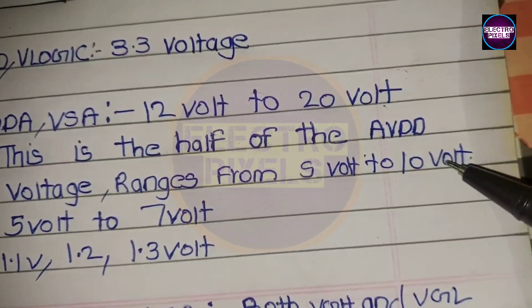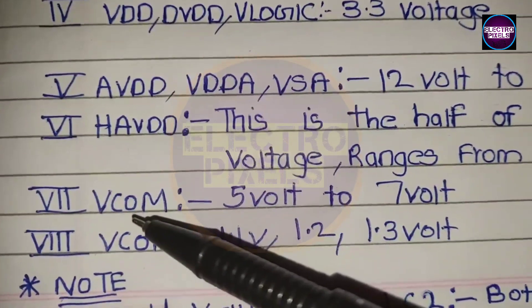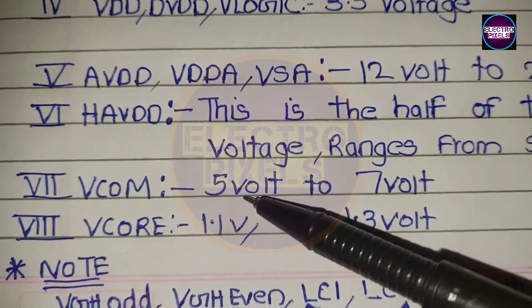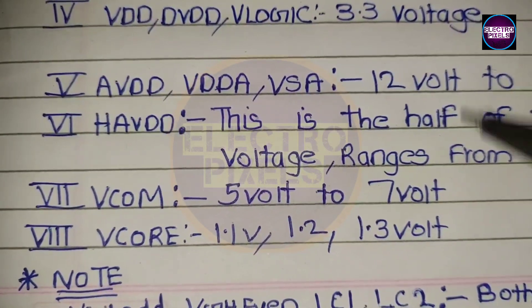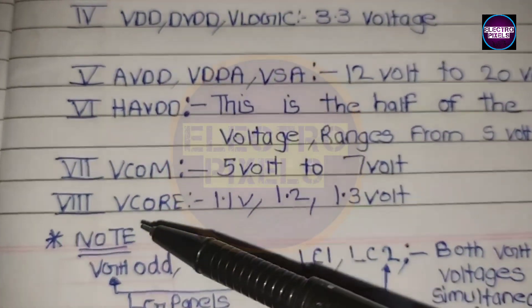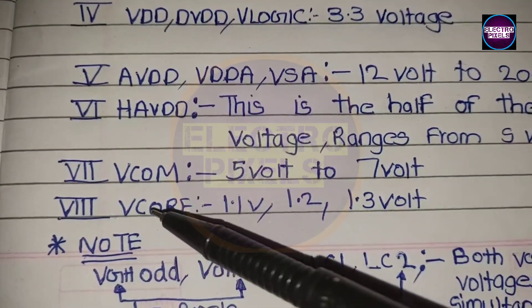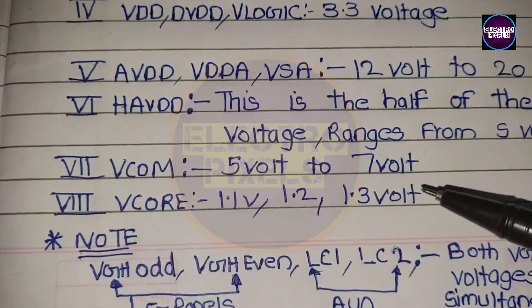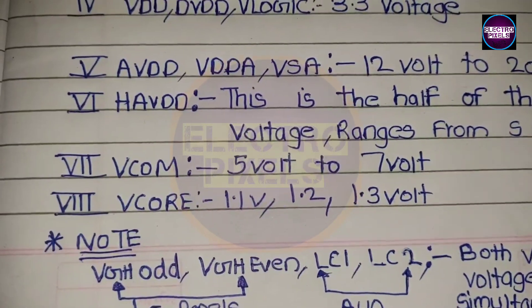Next is the VCOM voltage. Its values mainly range from 5V to 7V. The second VCOM voltage range is from 1.1V, 1.2V, 1.3V, etc.